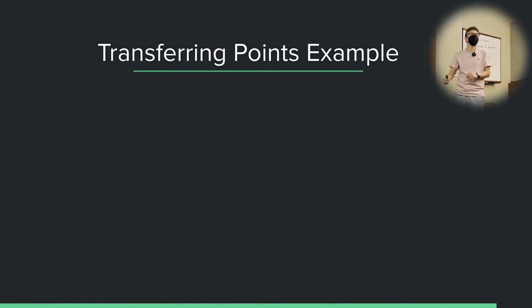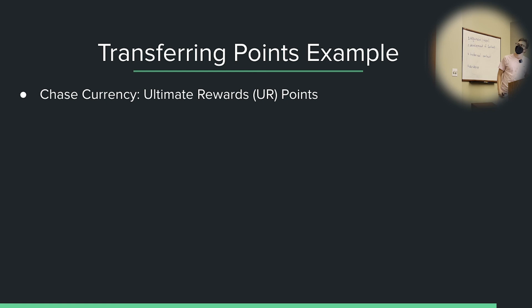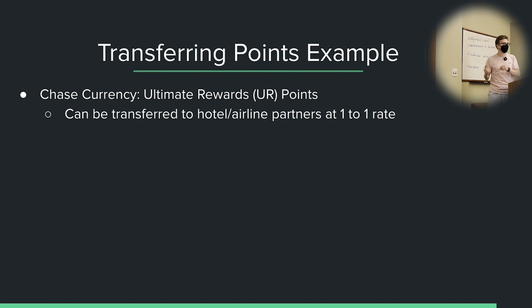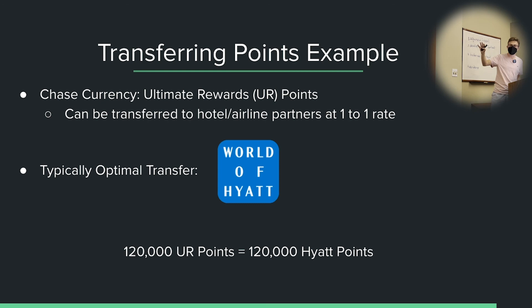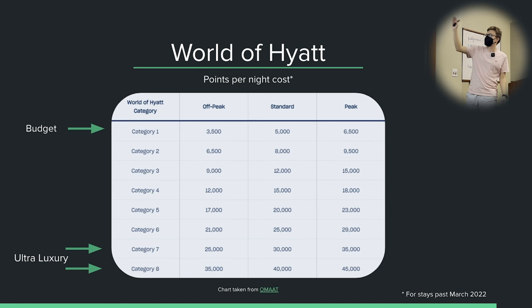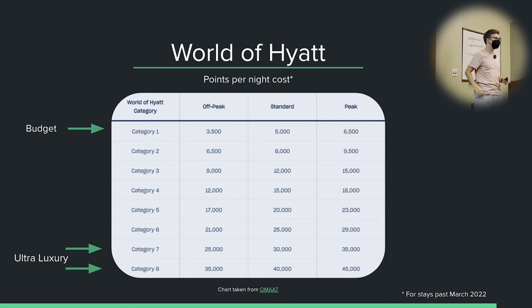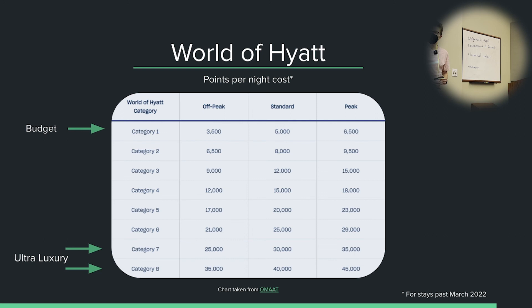What's a concrete example of what you might redeem points for? Chase points transfer to hotel and airline partners at a minimum of a one-to-one rate. If I have 120,000 Chase points, they transfer to 120,000 Hyatt points. Hyatt is usually the optimal transfer partner for Chase. This is Hyatt's award chart — there's a range from Category 1 hotels to Category 8. Category 1 are the cheapest hotels, not necessarily bad. Category 7 and 8 are their mega ultra-luxury resorts. It used to be that pretty much every Hyatt-owned property capped out at 30,000 points per night, but now some good ones are going up to 40–45k.